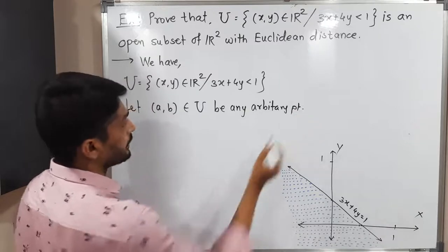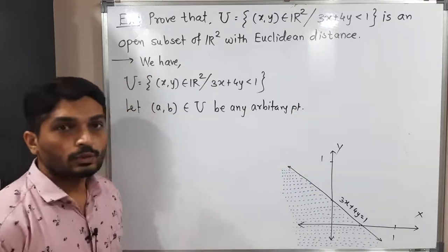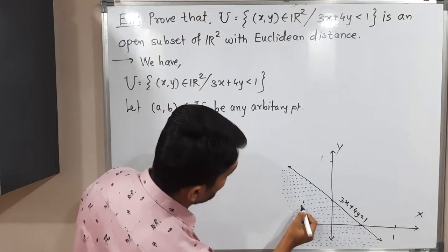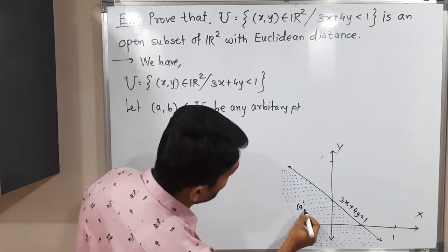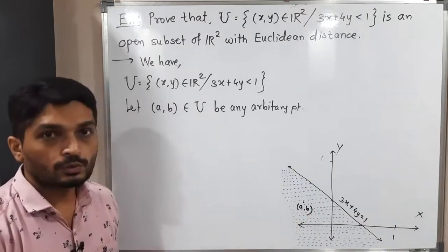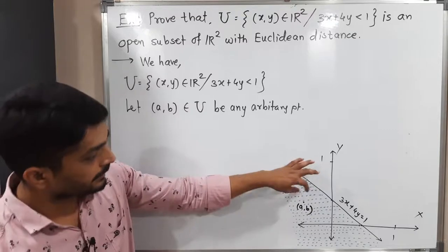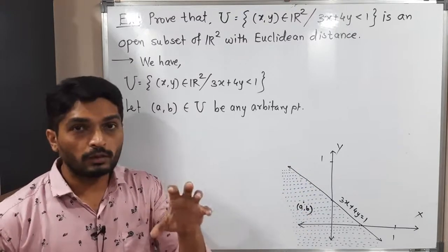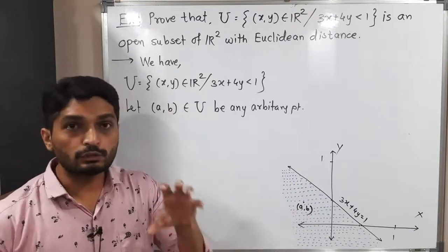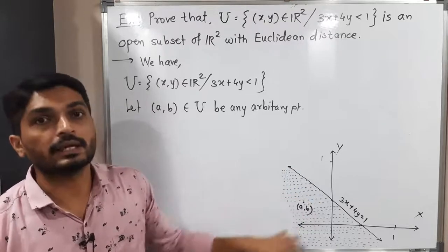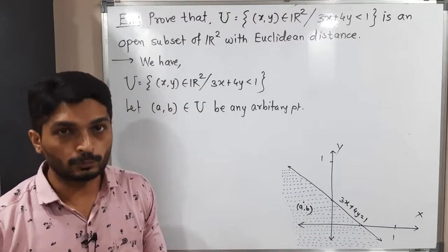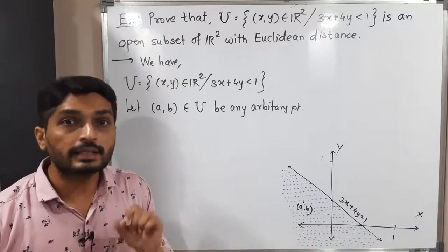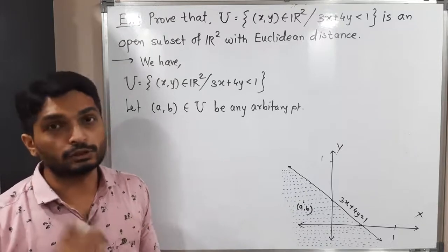I have taken one arbitrary point (a, b) in the region. Now we have to find a radius around (a, b) — that means we have to find a ball with center (a, b) and radius r which lies entirely inside the set U. Since (a, b) belongs to U, the point (a, b) satisfies the condition of U.